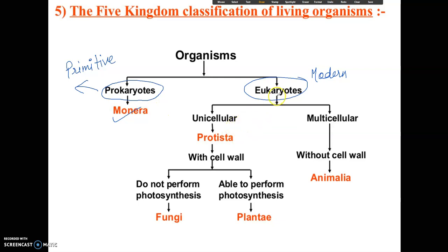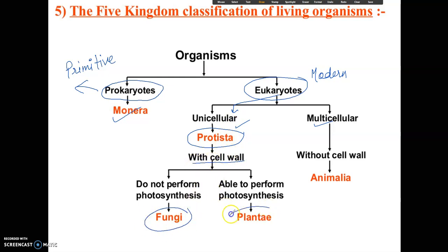When eukaryotes are classified into two classes — unicellular and multicellular — unicellular protists come under unicellular. Some unicellular organisms have cell walls, for example fungi and plantae, and some do not have cell walls. Those without cell walls are classified under Kingdom Animalia.